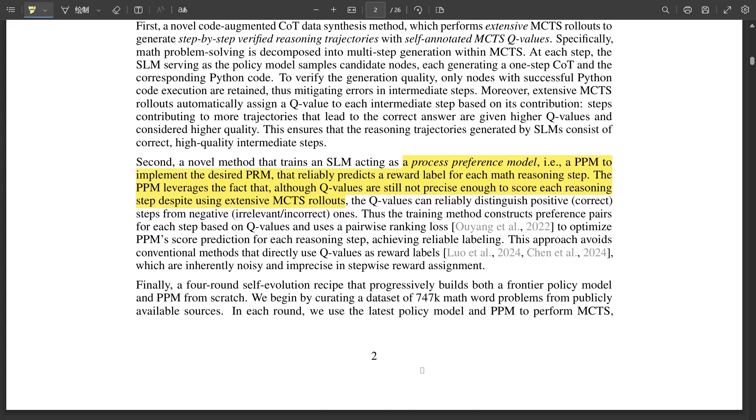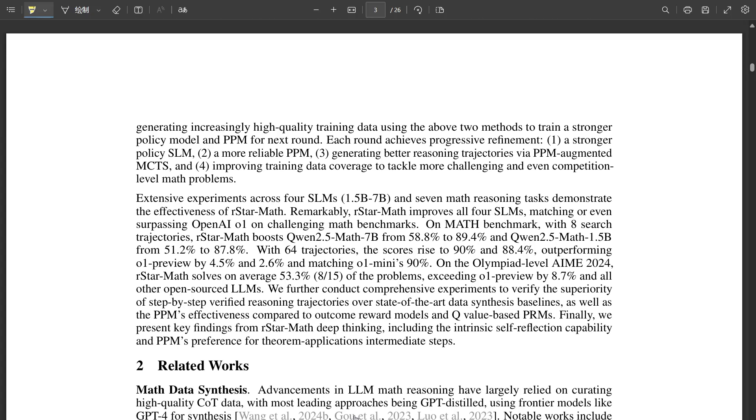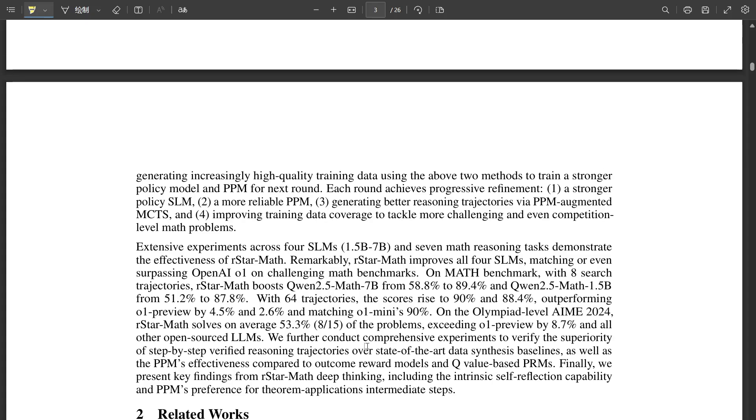And this learning process happens in stages, right? It does. The researchers describe this four-round self-evolution process, where the AI starts with a basic model and then uses its own generated solutions along with those scores from the PPM to iteratively improve its performance. It's basically bootstrapping its own math skills, becoming more sophisticated with each round.